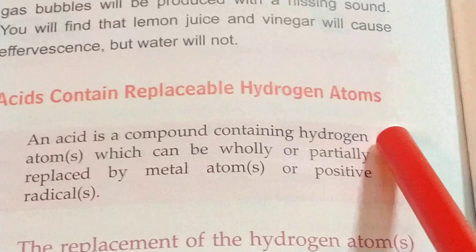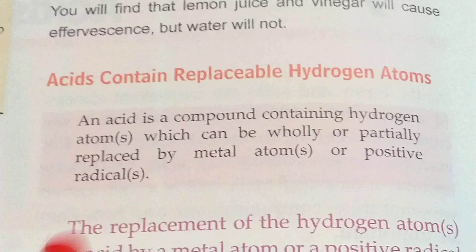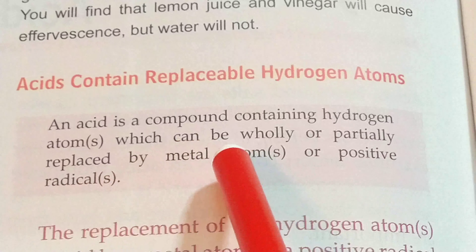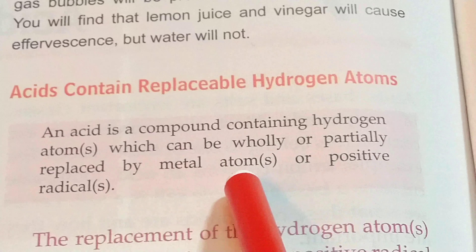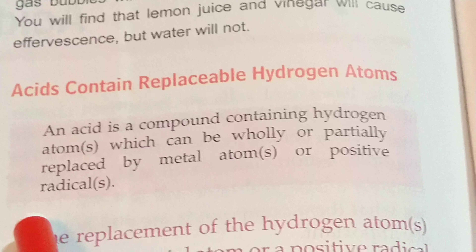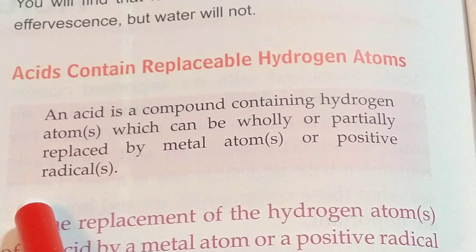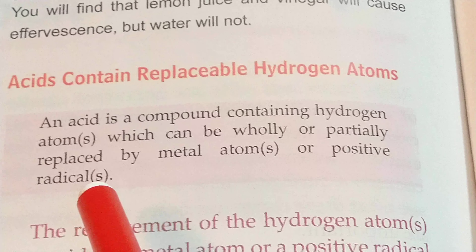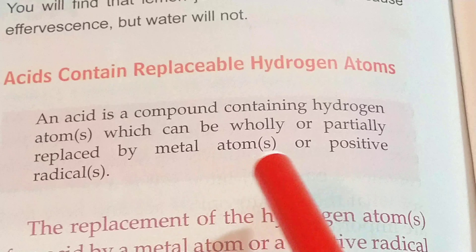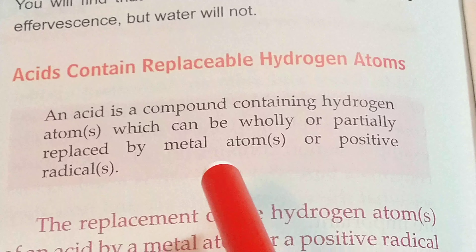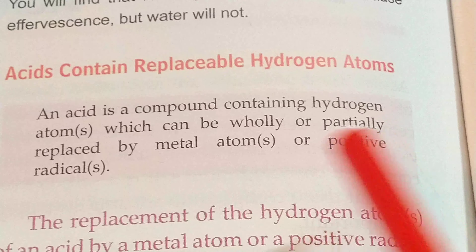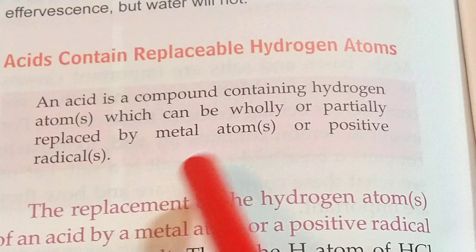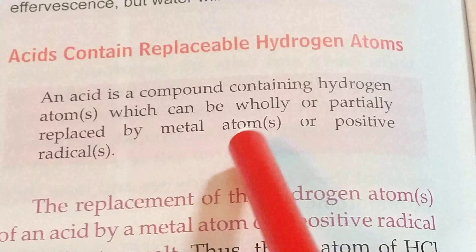Acids contain replaceable hydrogen atoms. Look at your book. An acid is a compound containing hydrogen atoms which can be wholly or partially replaced by metal atoms or positive radicals. So acid is a kind of compound which contains hydrogen atoms which can be easily wholly or partially replaced by metal atoms or positive radicals.